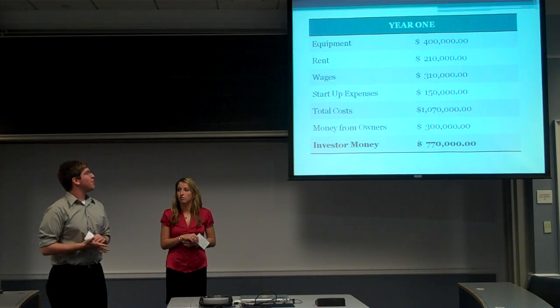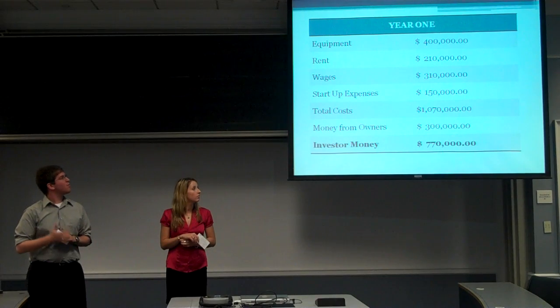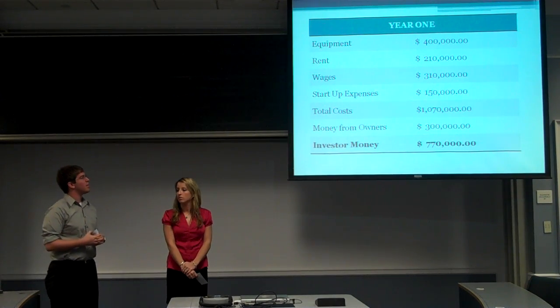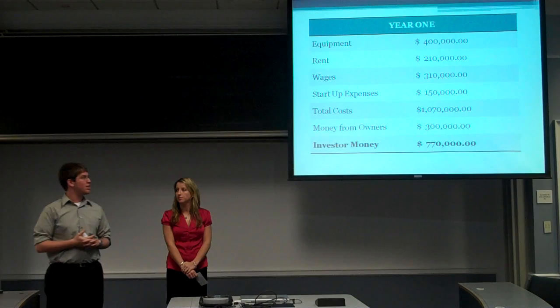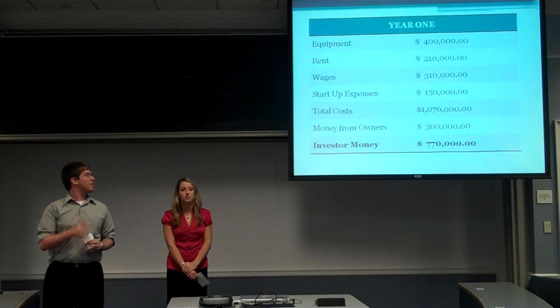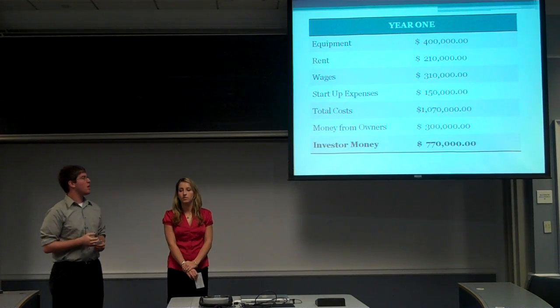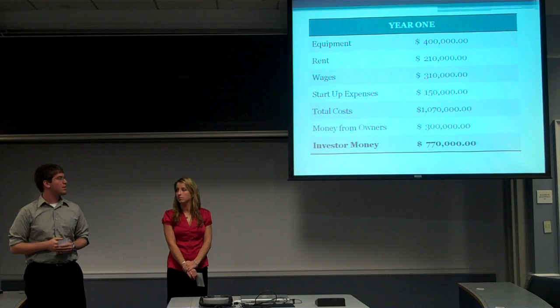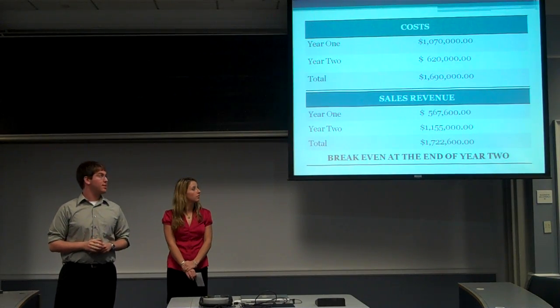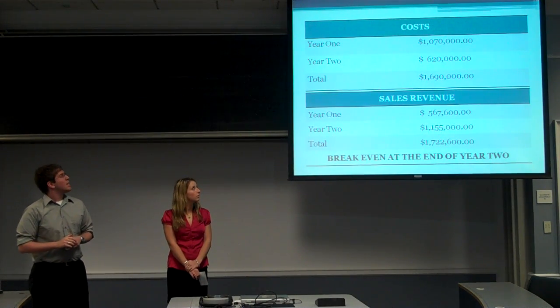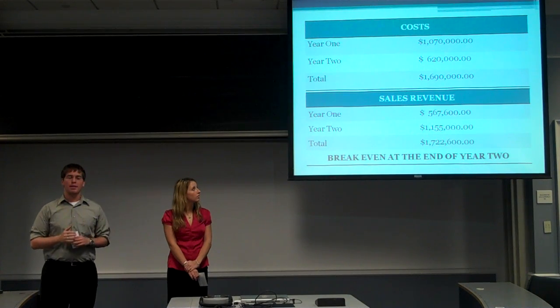Financials are quite simple for our gym. The equipment is $400,000, our rent each year is $210,000, wages $300,000, start-up expenses $150,000. With the money from the owners—me and Sarah—we're looking for investors and bank loans which will total $770,000.